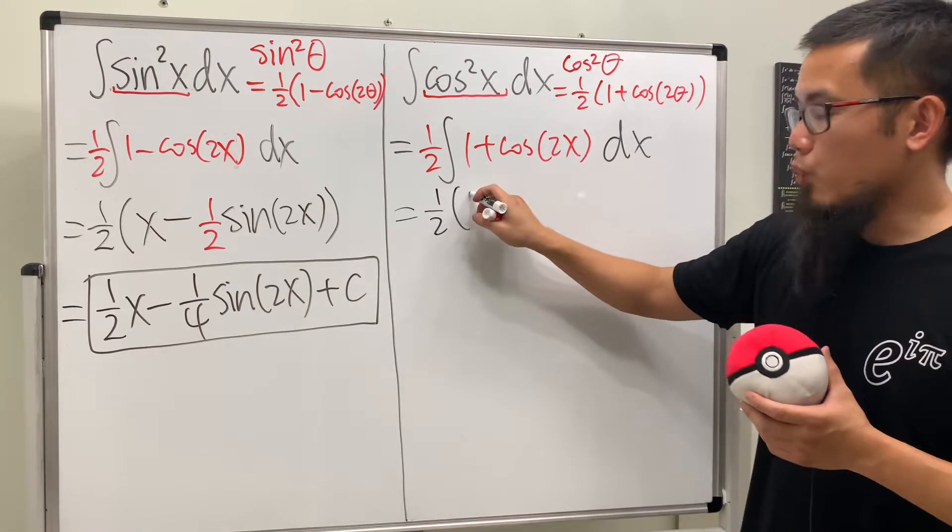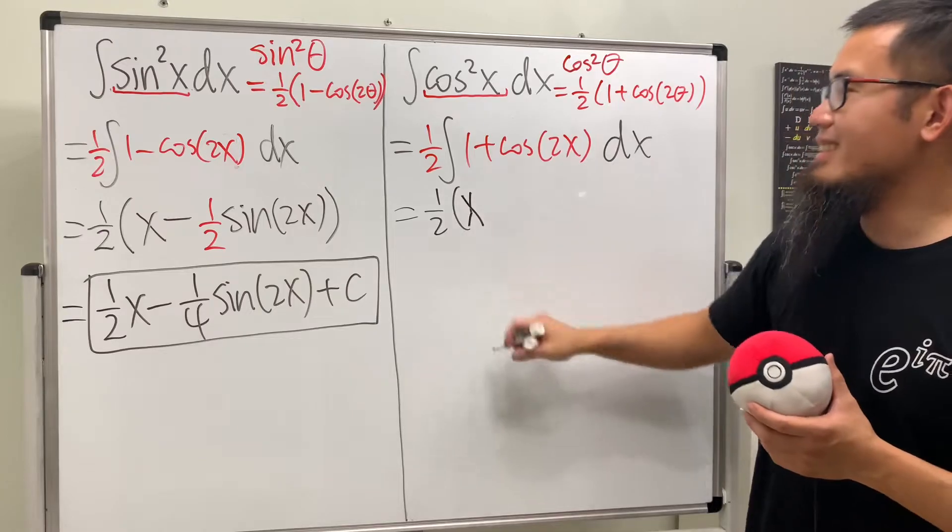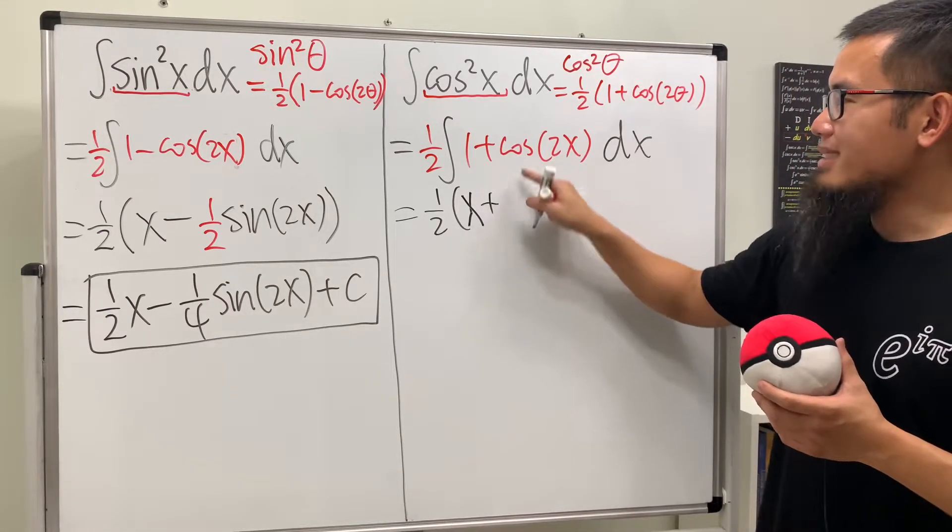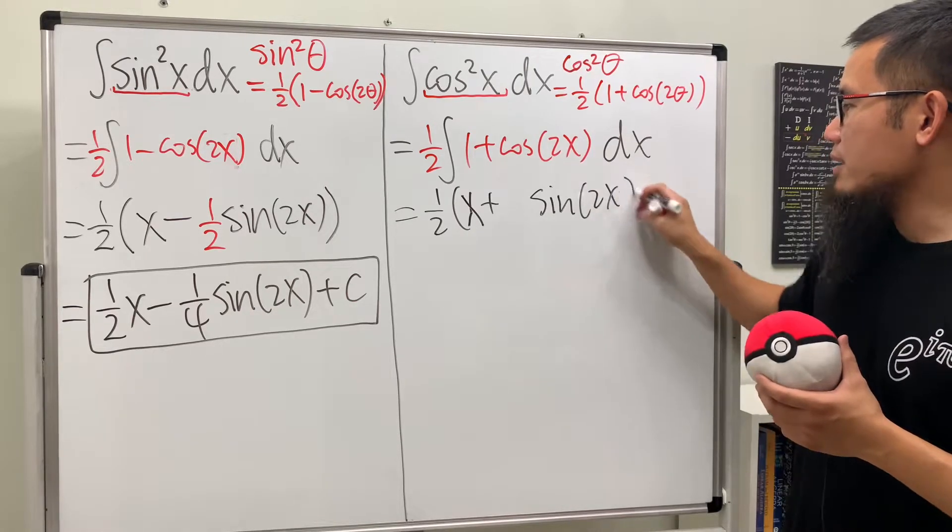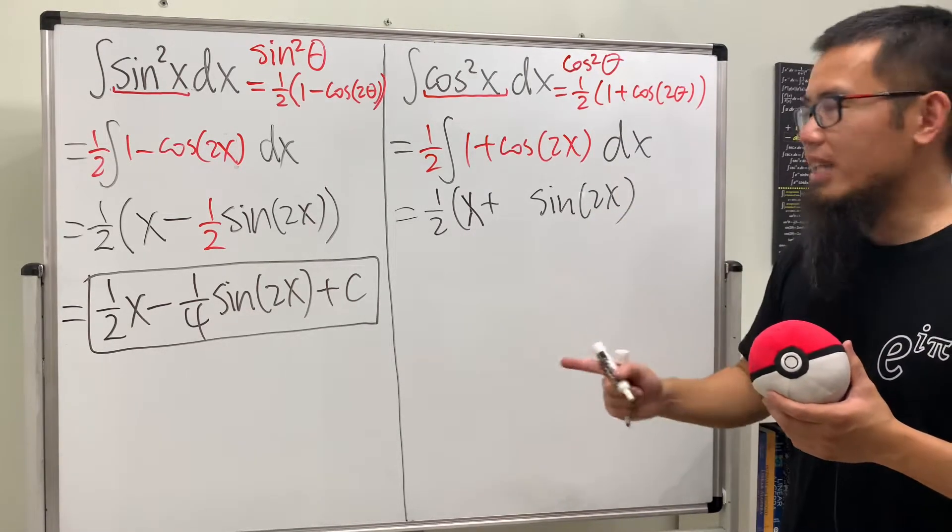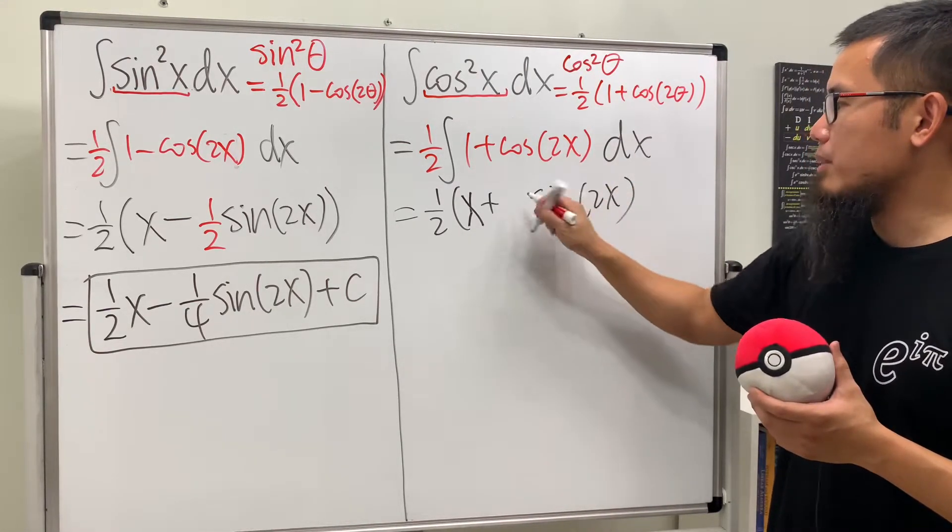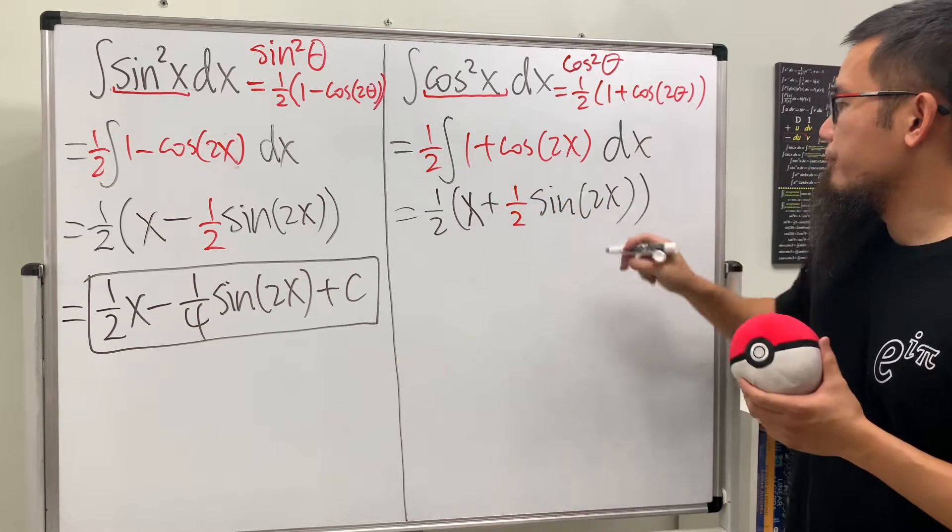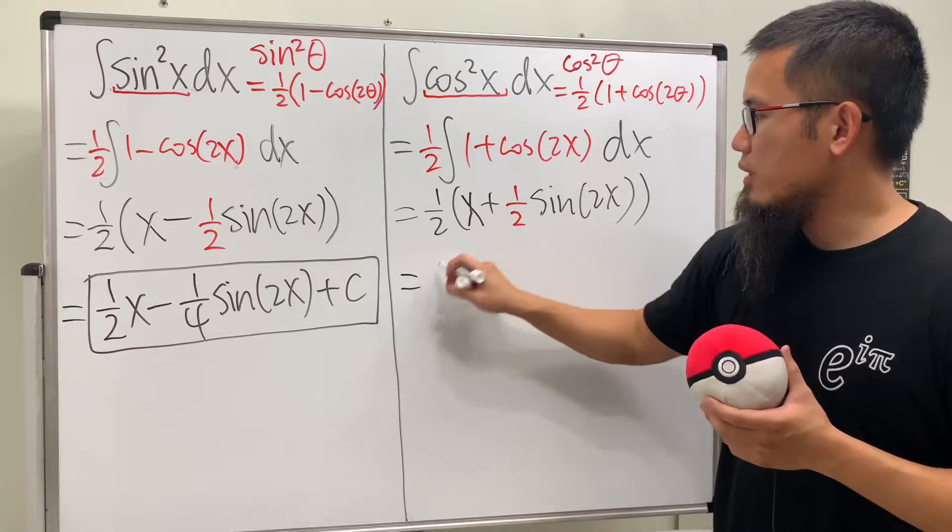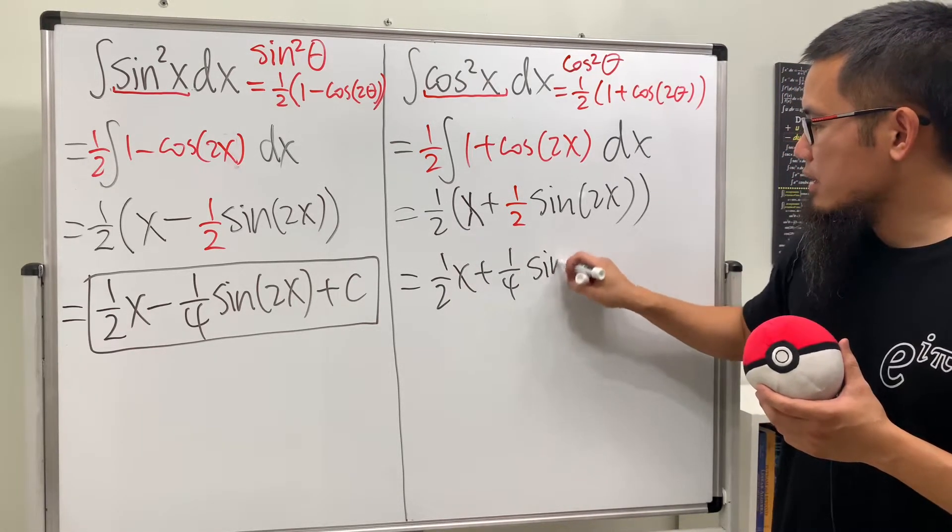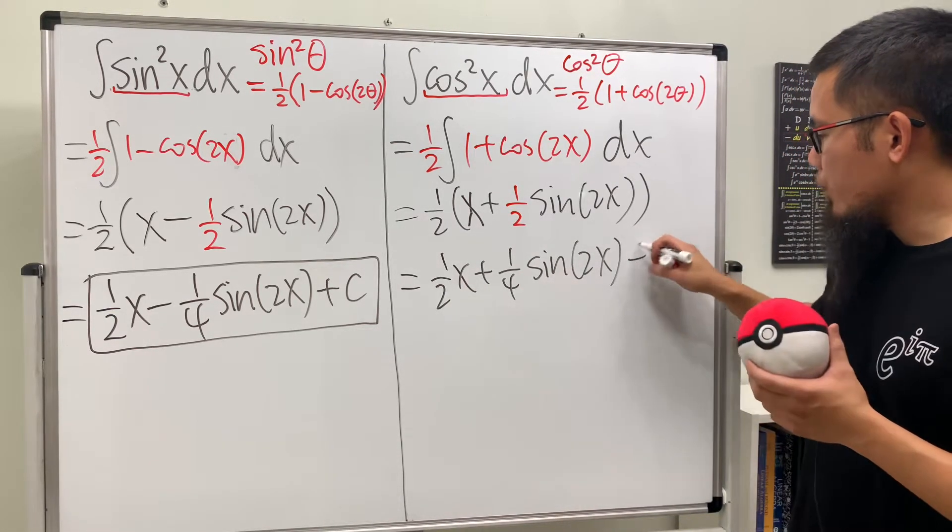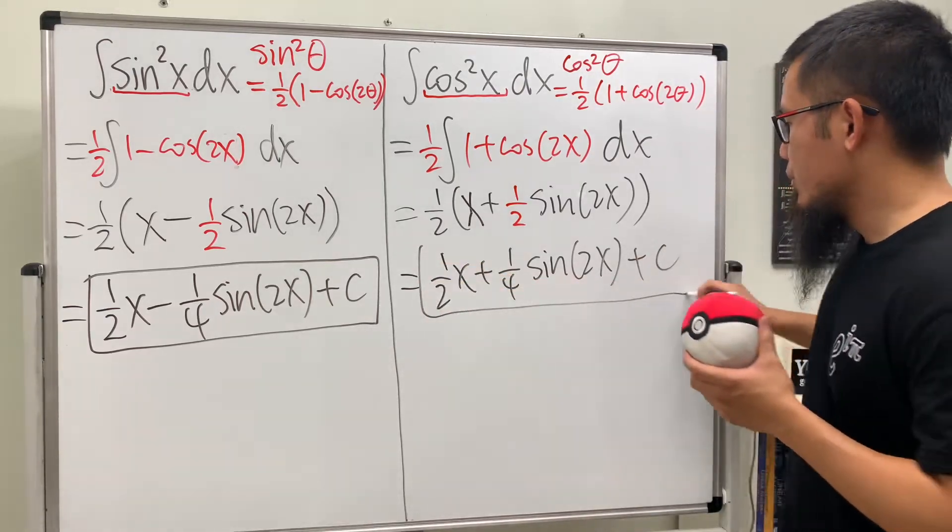All right, and then just finish this. This is 1 half, and then this is 1, I mean, this is x. And you bring down a plus. Integrating cosine, we get sine. Same thing, you write that down. And don't forget to divide it by the derivative right here, which is the number, just 1 half like this. And finally, we get 1 half x plus 1 fourth sine of 2x. And we are all done, so put a plus c right here, right?